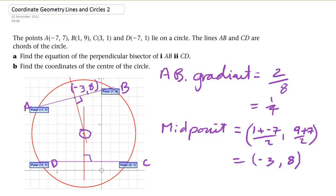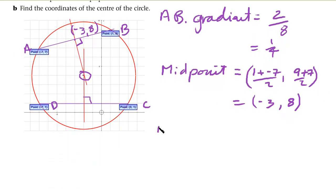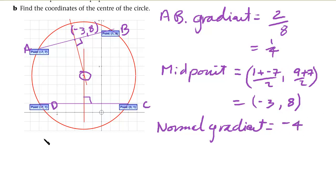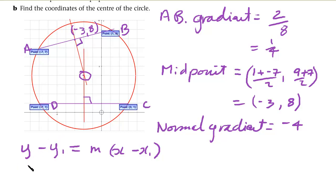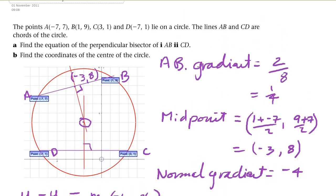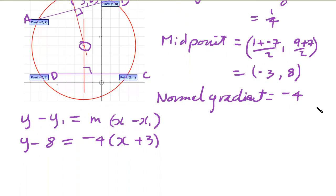We've found the midpoint and gradient of AB. The gradient of the perpendicular to AB equals -1/(1/4) = -4. Using the equation of a straight line, y - y1 = m(x - x1), and substituting the midpoint (-3, 8) and gradient -4: y - 8 = -4(x - (-3)), which gives y - 8 = -4(x + 3). That's the equation of the perpendicular bisector of AB.